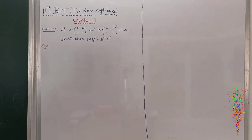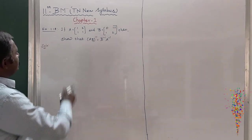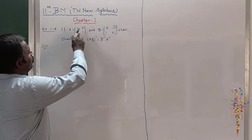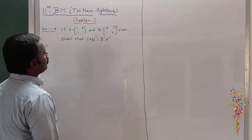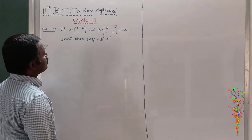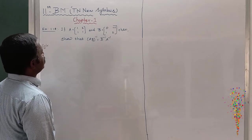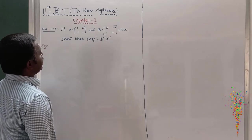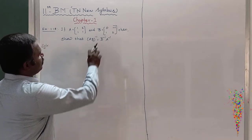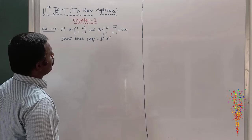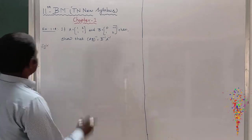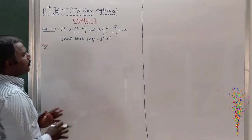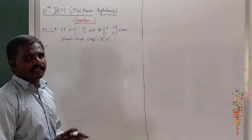Next, example 1.1H. If A equals [1, 2; 1, 1] and B equals [0, -1; 1, 2], then show that (AB) inverse equals B inverse into A inverse.